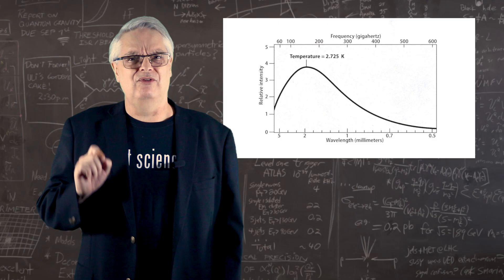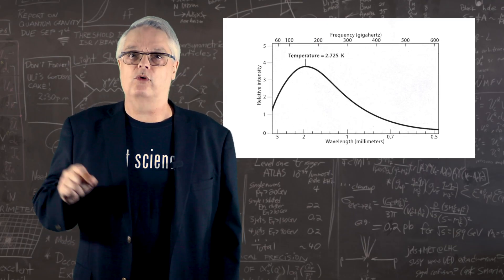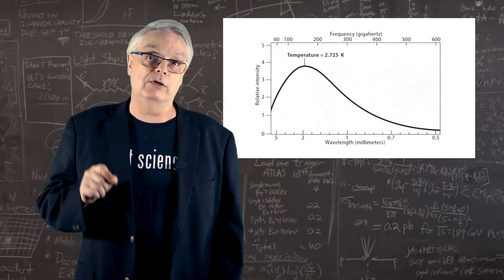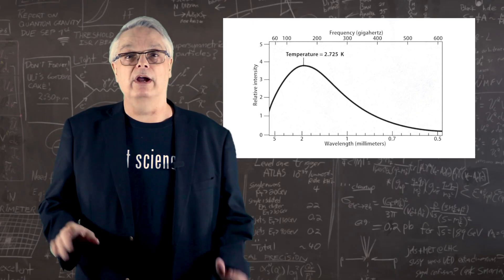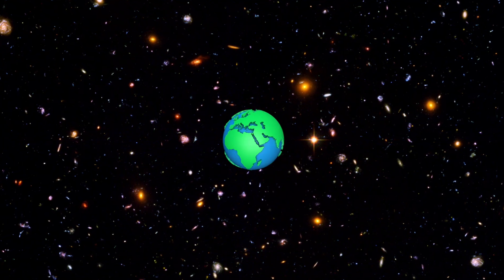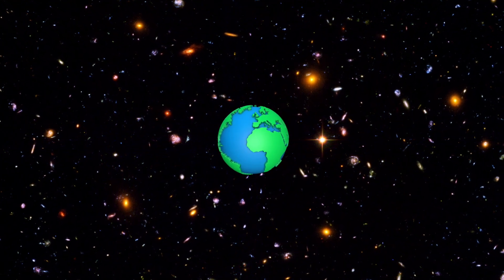Actually, the temperature is very precisely known. It is 2.72548 with an uncertainty of 0.00057 Kelvin. And it's the same everywhere in all directions. The Earth is embedded in the remnant fireball of the Big Bang, which is an awesome thing when you think about it.